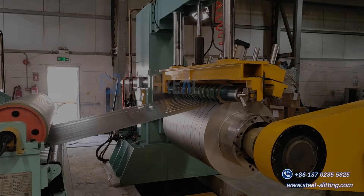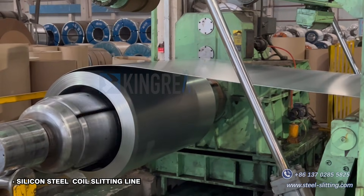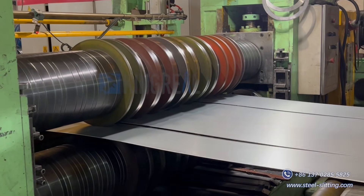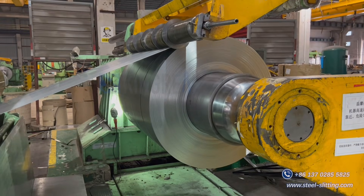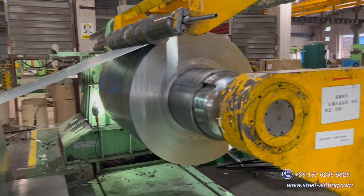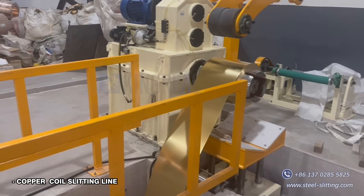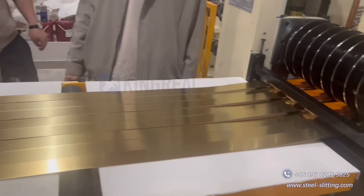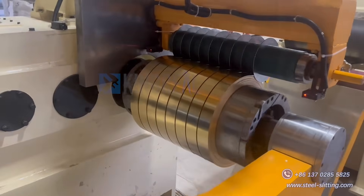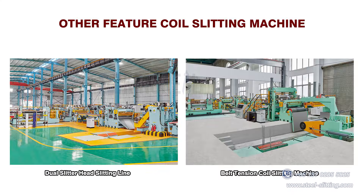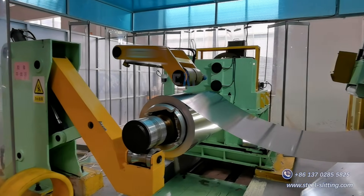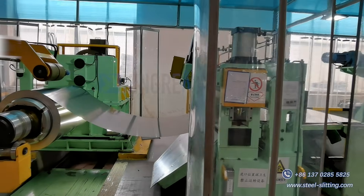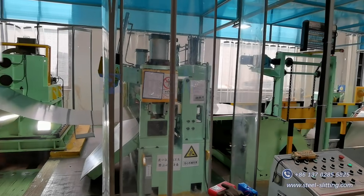Silicon steel coils are prone to uneven tension or deformation during the slitting process due to their large thickness and strong magnetic properties. In order to ensure the slitting quality, silicon steel slitting machines are usually equipped with advanced tension control systems. To ensure the neatness and coil shape of the slit copper strips, the slitting machine is equipped with a high-precision rewinding system, which avoids the copper strips from becoming loose or curled. In addition, the different production requirements for coil processing also determine the different types of steel coil slitting lines. Common types include dual slitter head slitting line, belt tension coil slitting machine, etc.